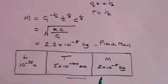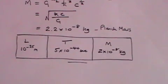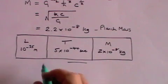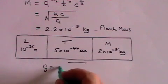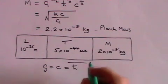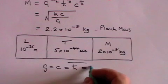And the interesting thing about these is that if you apply those values for length, time and mass then G equals C equals H bar equals 1.